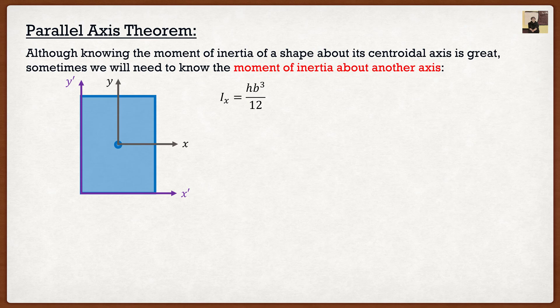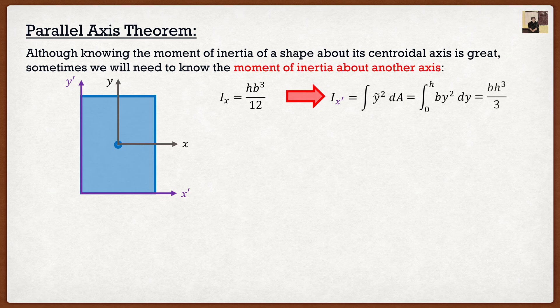Now if you don't know parallel axis theorem, you're going to have to go integrate. But if I wanted to, I could find the moment of inertia through the integration method — I can take a horizontal slice, do the integral, and get that it's base times height cubed divided by three. Notice that depending on where the axis is, the moment of inertia is going to change. If I take my axis as the bottom of the shape, the moment of inertia increases because there's a lot more area farther away from the axis.